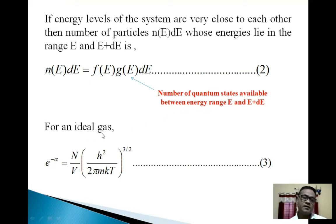So for an ideal gas, we have discussed in the previous lecture, e^(-α) = (N/V)*(h²/2πmkT)^(3/2). Equation 3.